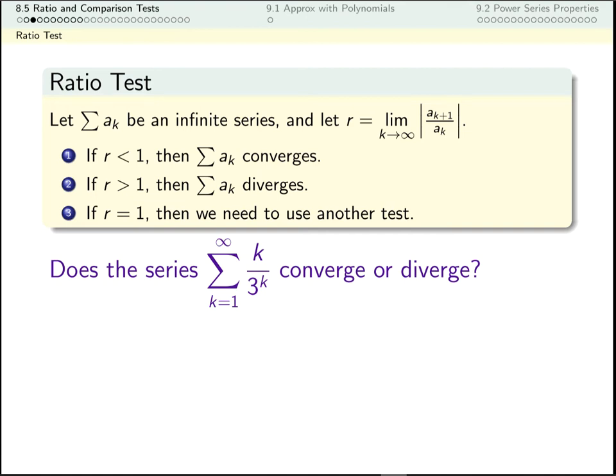The limit I'm going to take is my k plus first term over my kth term. So the kth term is easy enough, that's k over 3 to the k. Now I need to figure out what term I get if all of my k's are replaced by k plus ones. So the k in the numerator becomes a k plus 1. The k in the denominator also becomes a k plus 1. What I want to know is the limit as k goes to infinity of the absolute value of this ratio.